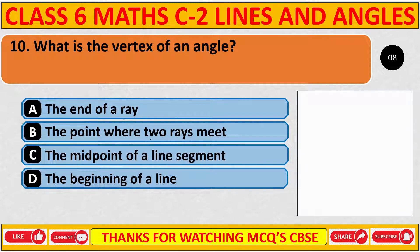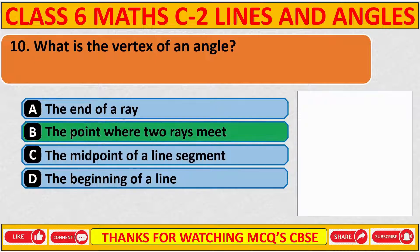What is the vertex of an angle? The correct answer is B: the point where two rays meet.